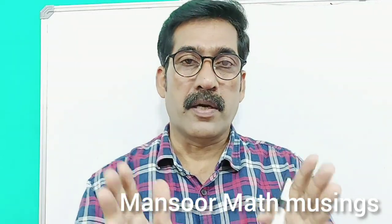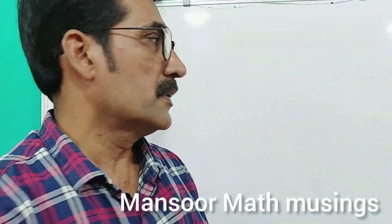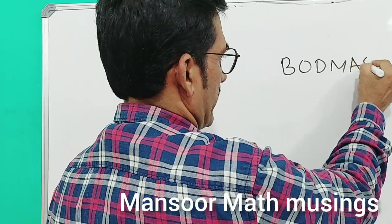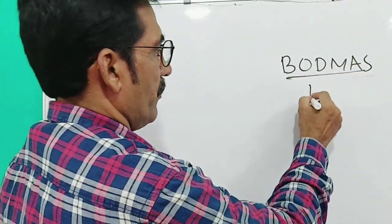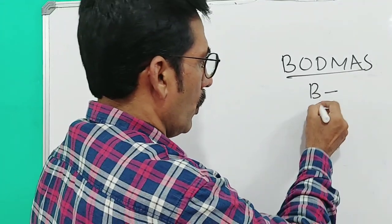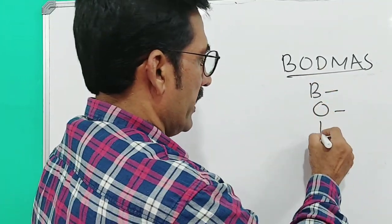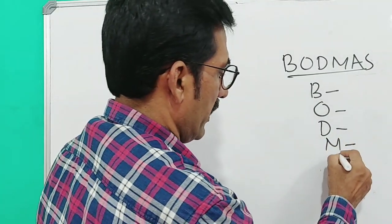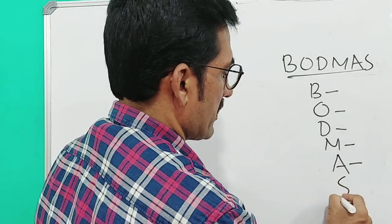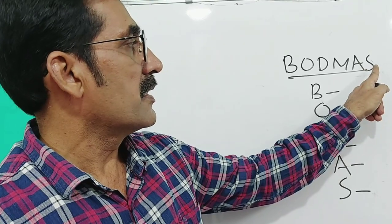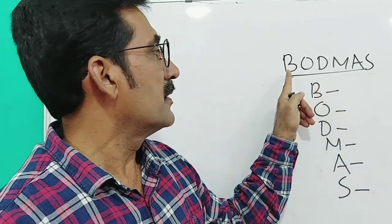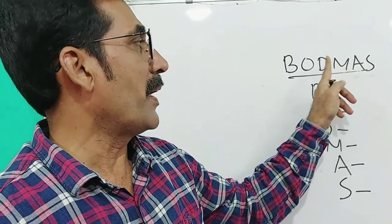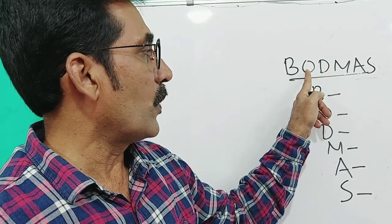Dear children, today our topic is BODMAS. BODMAS describes different kinds of operations: B for Bracket, O for Order, D for Division, M for Multiplication, A for Addition, S for Subtraction. Subtraction is the last operation; before subtraction comes addition, before addition multiplication, before multiplication division, before division Order, and the first one is Bracket.